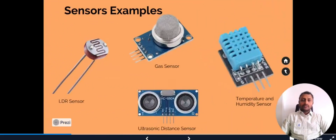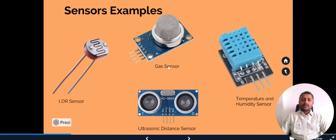Here are some examples of general IoT sensors. On the left-hand side you can look into the LDR sensors, which detect the intensity of light. This is the air quality gas sensor — it can detect ammonia, sulfur, benzene, and other harmful gases in our environment.